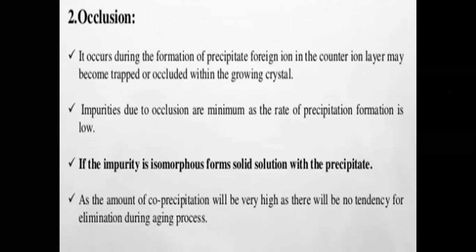The second part of co-precipitation is occlusion. Occlusion occurs during the formation of precipitate — foreign ions in the counter-ion layer may become trapped or occluded within the growing crystals. Impurities may adhere on the surface of each part of the precipitate, and when particles come together to form larger molecules, occlusion occurs. Impurities due to occlusion are minimized when the rate of precipitation formation is low. If the impurities are isomorphous with the precipitate, the amount of occlusion is greater, and there is no tendency for elimination during aging.